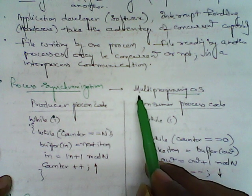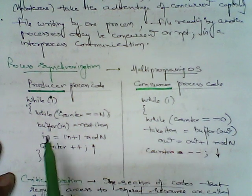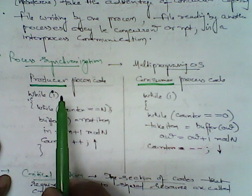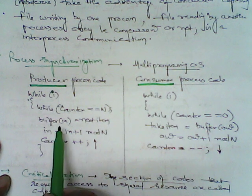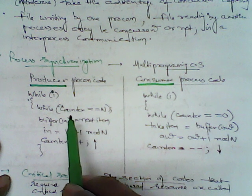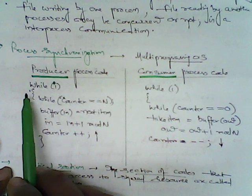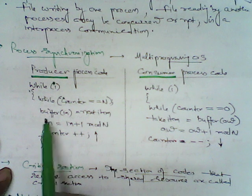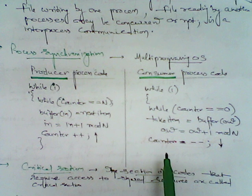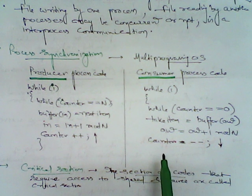Process synchronization uses a multi-process operating system. I have taken a consideration of a producer and a consumer process code. The producer process code is something where you are writing or giving something into the process, and the consumer process code is something that takes from the process and uses it. Using a programming sequence like while(1), while counter equals n, the next item is taken to the buffer. In process synchronization, we take input to the buffer and from the buffer take it to the output — this sequence is called buffering.